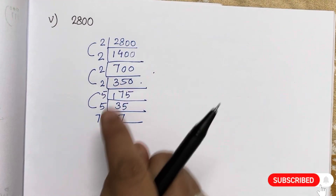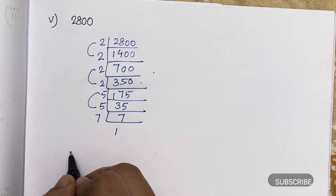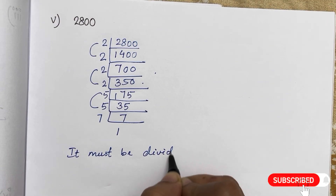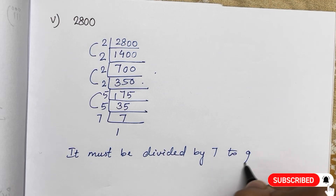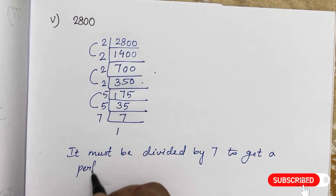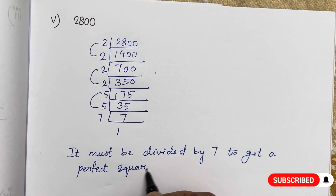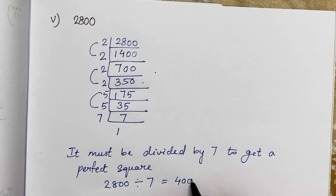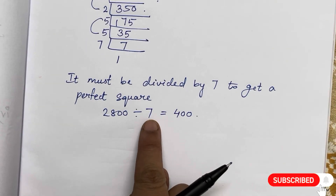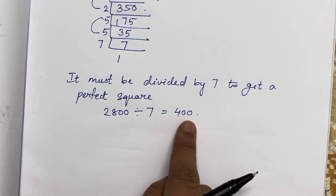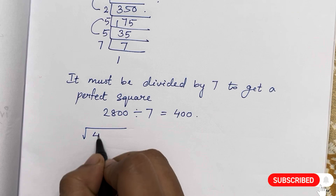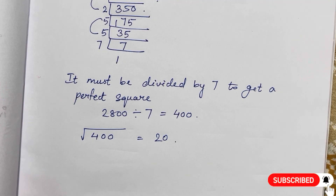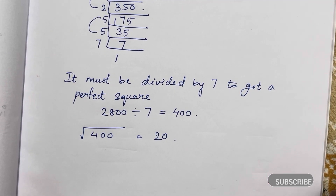So this number must be divided by 7, because we don't have a pair of 7. 2800 divided by 7 is 400. Now we will find the square root of 400, which is 20, because 20 into 20 is 400.